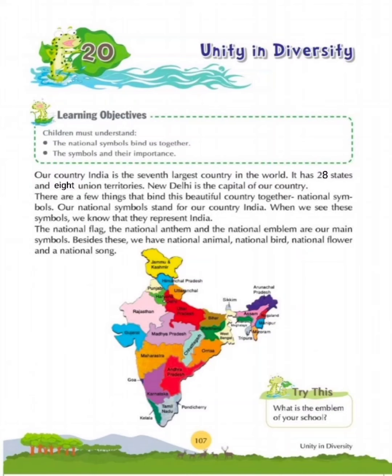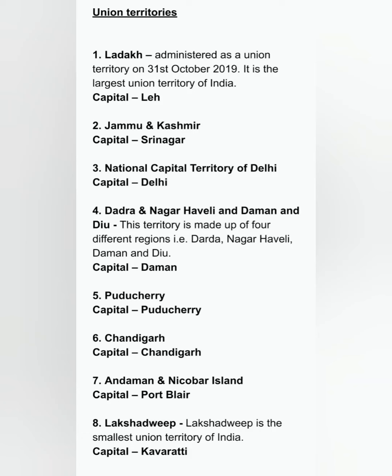Here are the names of all union territories: Ladakh, which is the largest of all the union territories; Jammu and Kashmir; Delhi; Dadra and Nagar Haveli; Daman and Diu; Puducherry; Chandigarh; Andaman and Nicobar Islands; and Lakshadweep, which is the smallest of all the union territories.